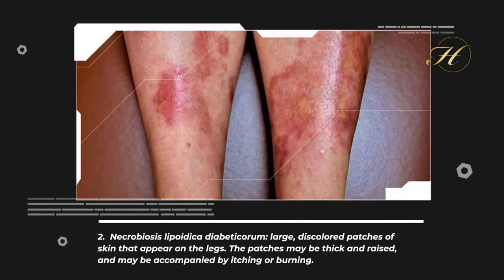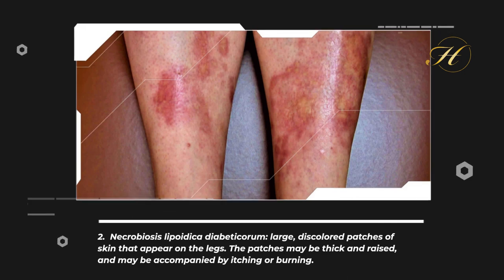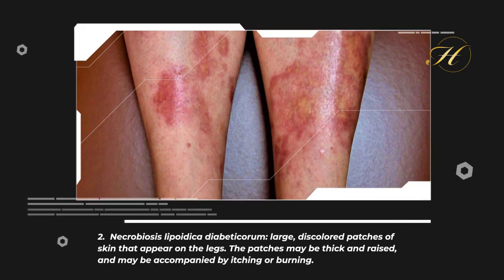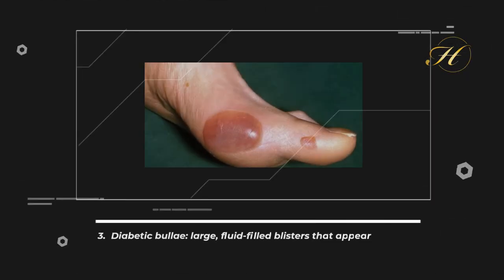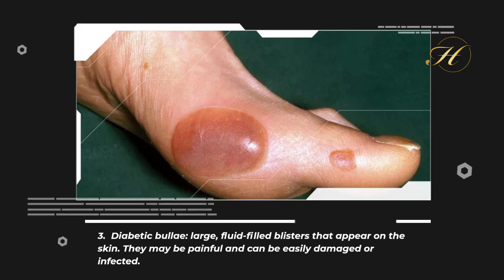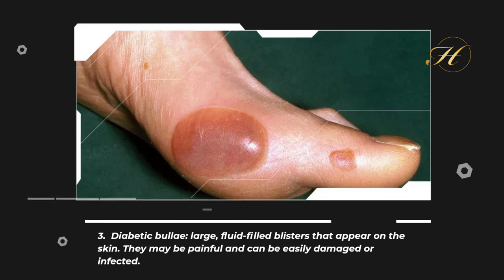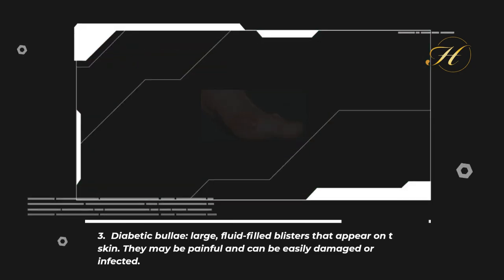2. Necrobiosis Lipoidica Diabeticorum: Large, discolored patches of skin that appear on the legs. The patches may be thick and raised, and may be accompanied by itching or burning. 3. Diabetic Bullae: Large, fluid-filled blisters that appear on the skin. They may be painful and can be easily damaged or infected.